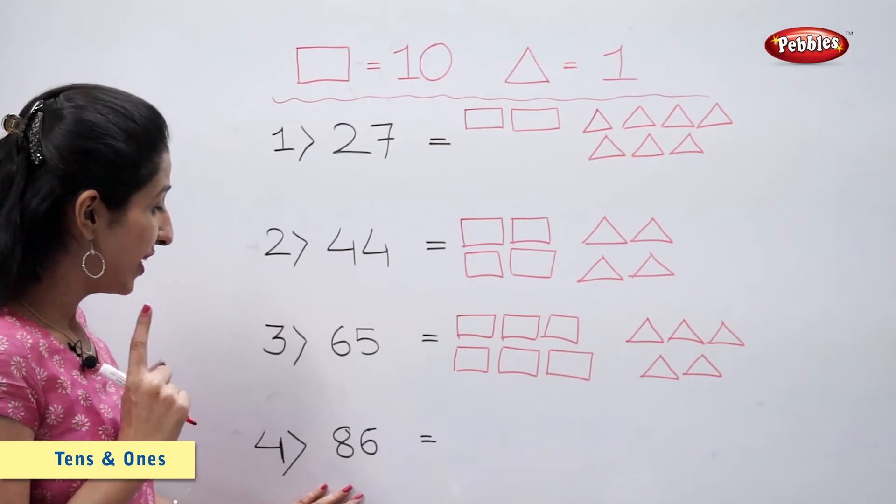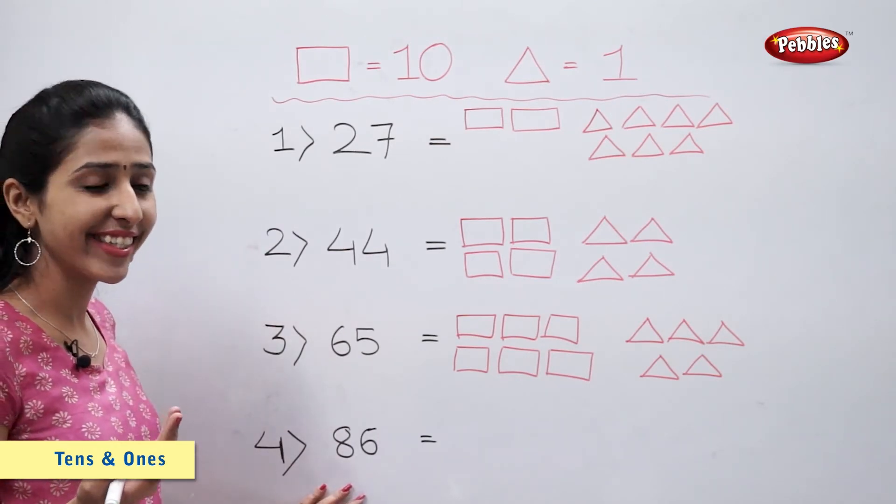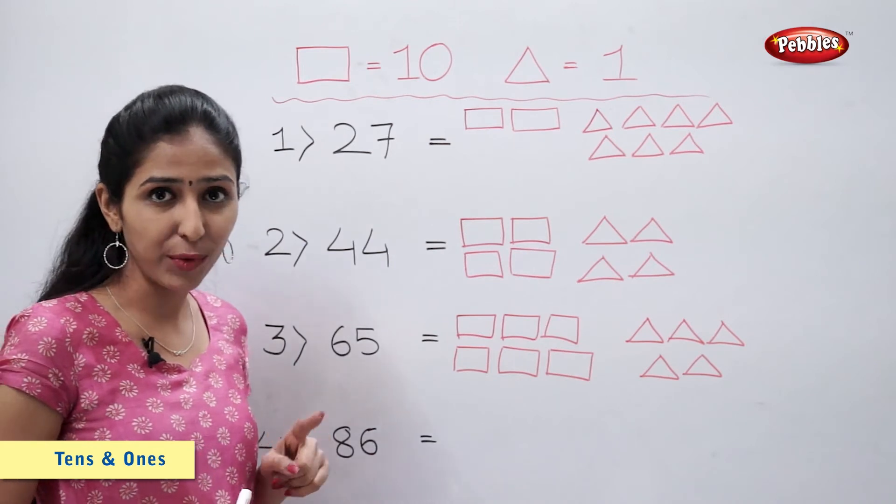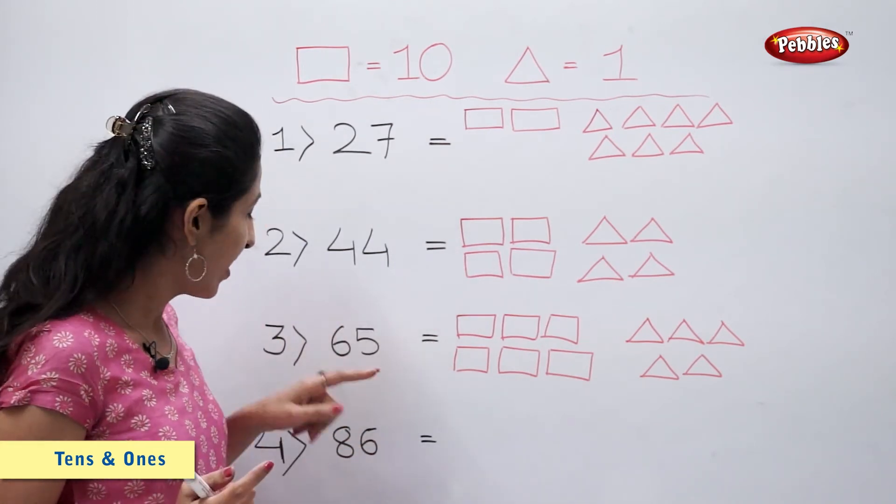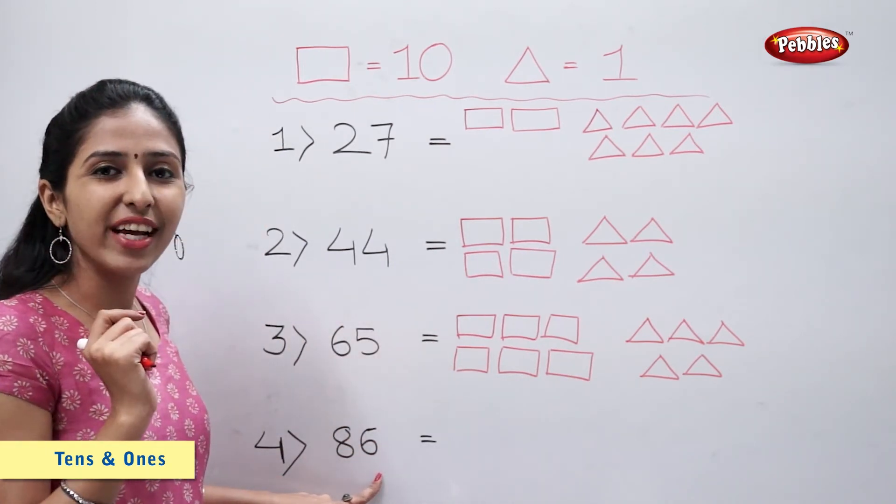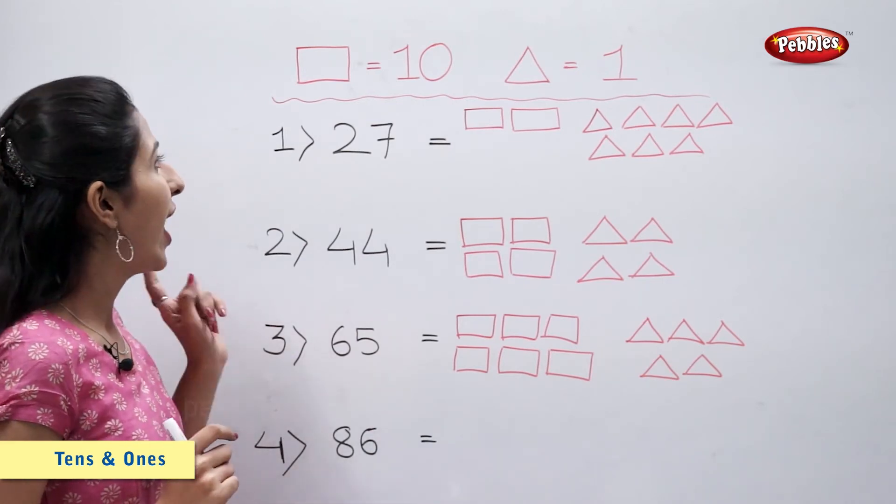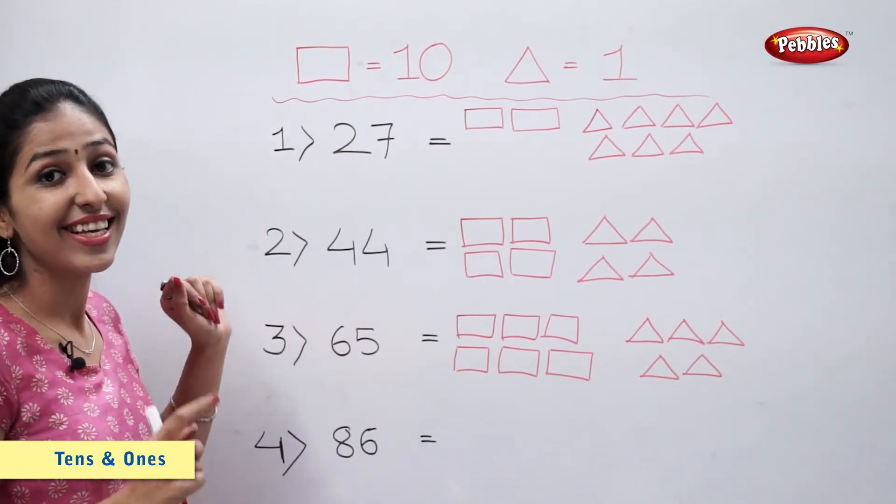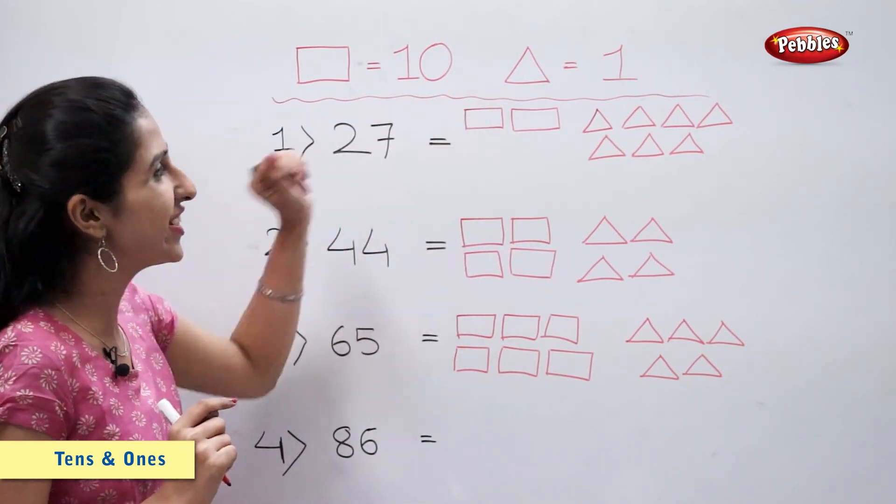Now number 86. 86 is equal to 8 tens and 6 ones. So I will use 8 rectangles and 6 triangles.